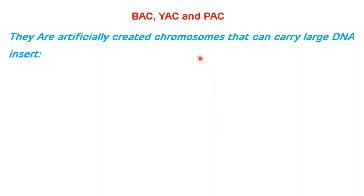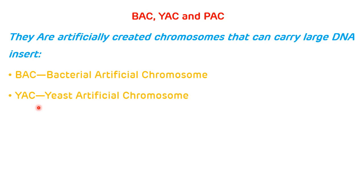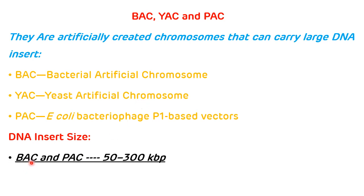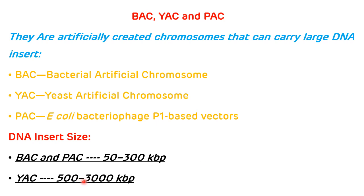Now, bacterial artificial chromosome (BAC), yeast artificial chromosome (YAC), and PAC. These are artificially created chromosomes that can carry large DNA inserts. BAC is bacterial artificial chromosome, YAC is yeast artificial chromosome, and PAC is E. coli bacteriophage T1-based vectors. Bacterial artificial chromosomes and E. coli bacteriophage T1-based vectors can carry up to 50 to 300 kilobase pairs of DNA fragments, while yeast artificial chromosomes can carry around 500 to 3000 kilobase pairs of DNA fragments.